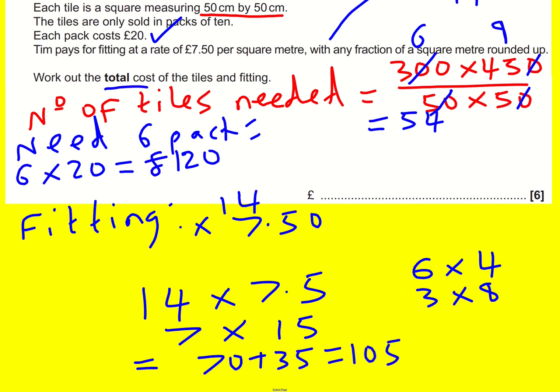So finally, what's the total cost? The total cost is going to be £120 plus £105, which is £225.